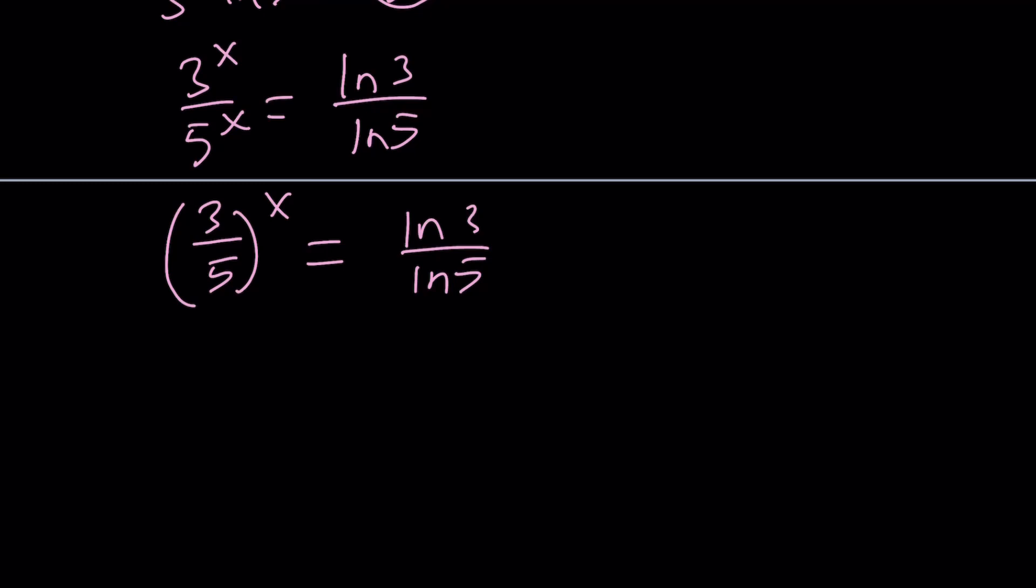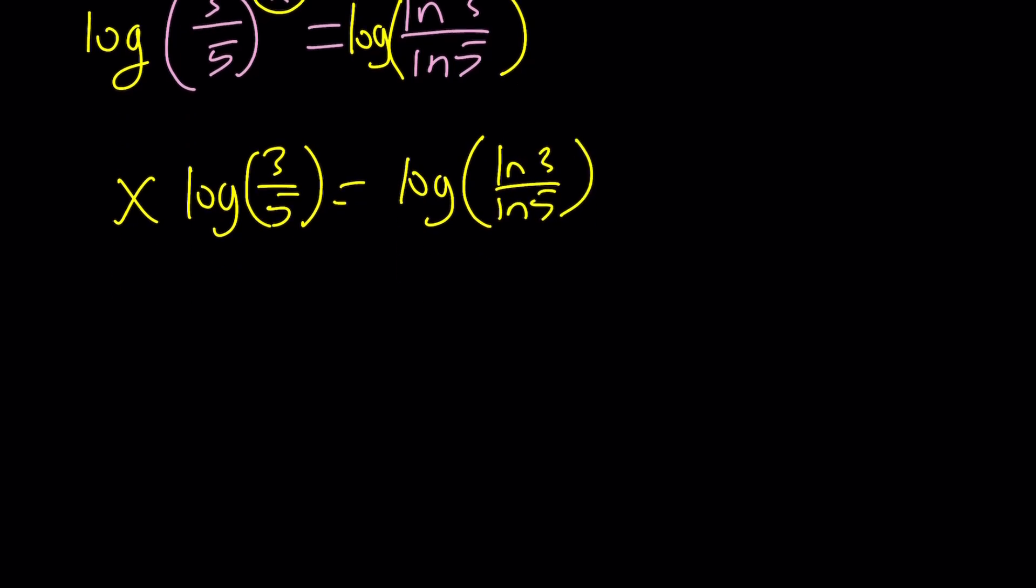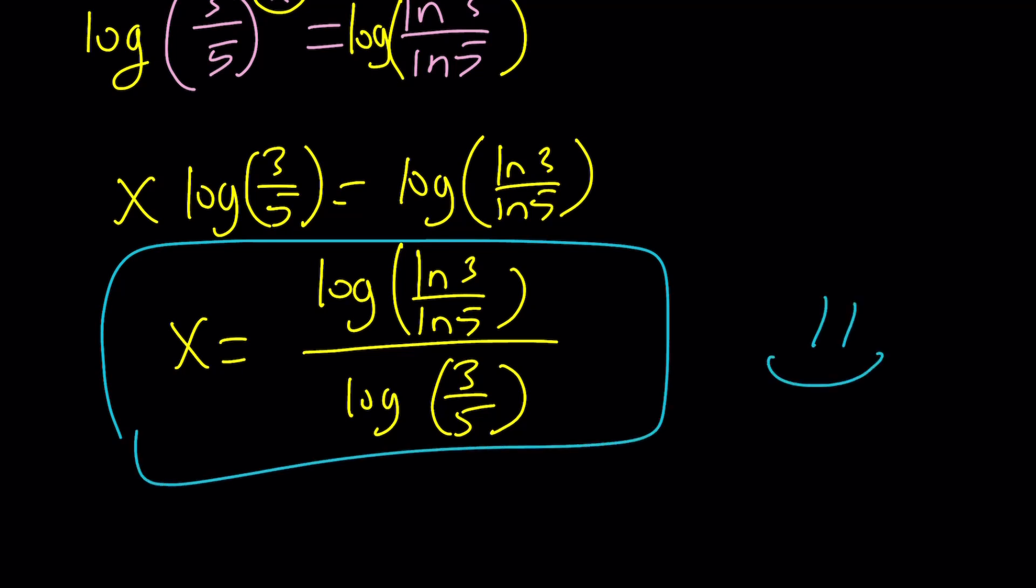And now, at this point, we're going to obviously log both sides. If you want a little bit of variation, you can use log base 10 instead of ln, just for variation. And then bring this x to the front. x log 3 over 5 is going to be log of ln 3 over ln 5. Again, we can leave it like that. Don't expand it. And then just use division. And then you can kind of talk about how do these two answers compare? Why are they the same? Of course, there's a lot of nice properties that play a role in this. But this brings us to the end of the video.